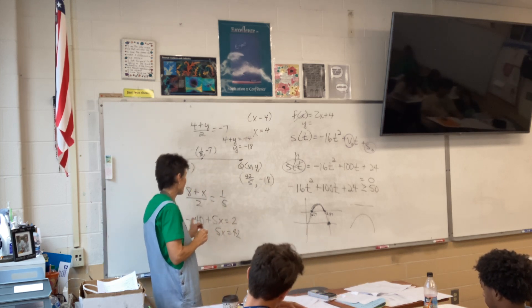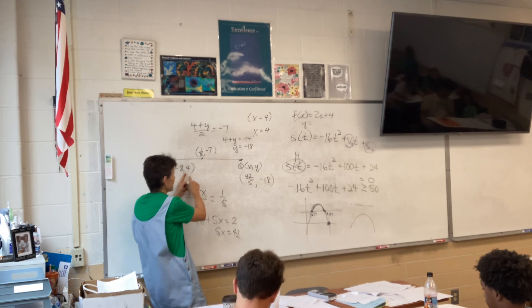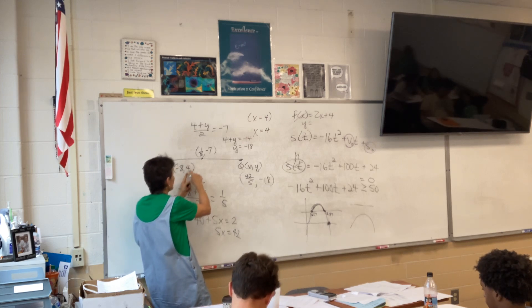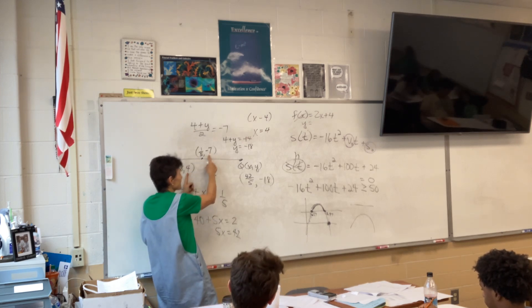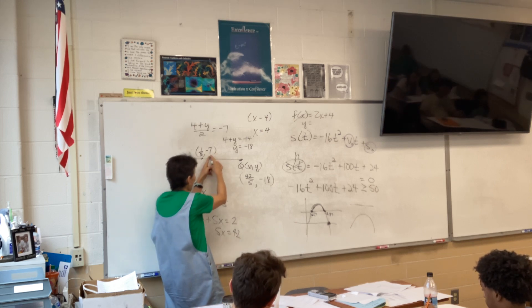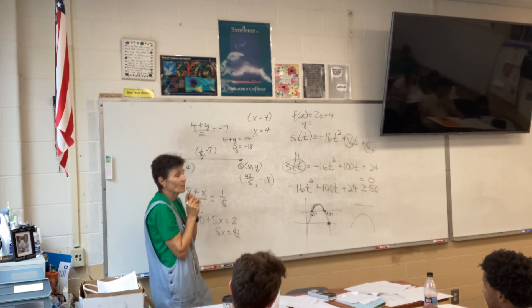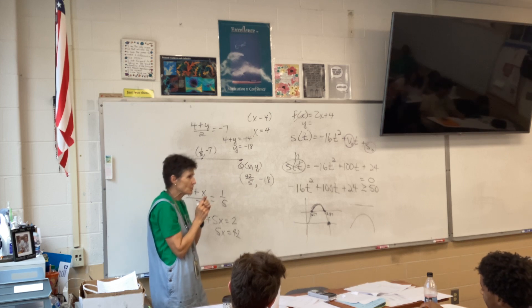And then, rinse and repeat with the Y's. So 4 plus Y over 2 equals negative 7. So, 4 plus Y equals negative 14, and Y equals negative 18. So, there's your point. That actually might be the easiest way for X, anyhow, because of the fractional involvement.